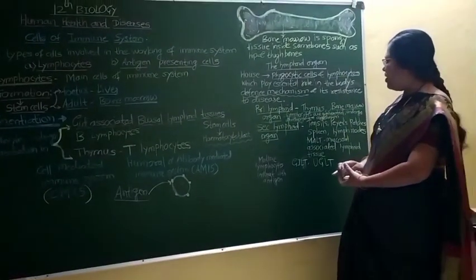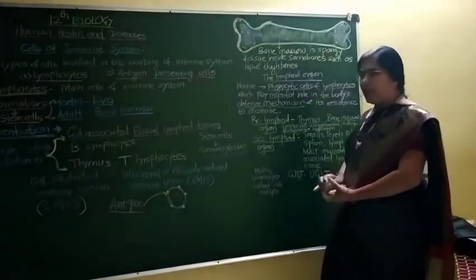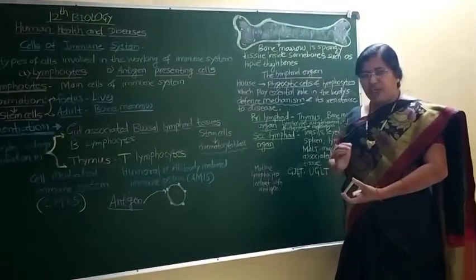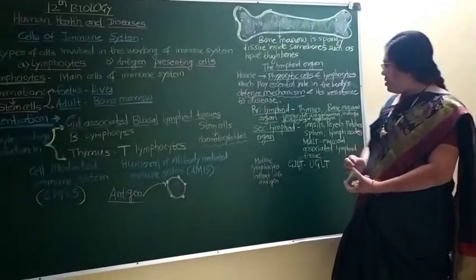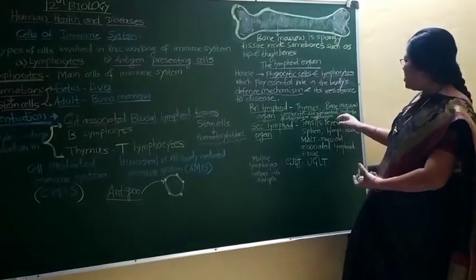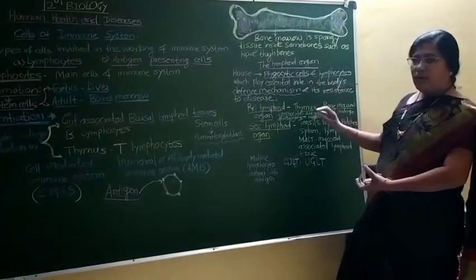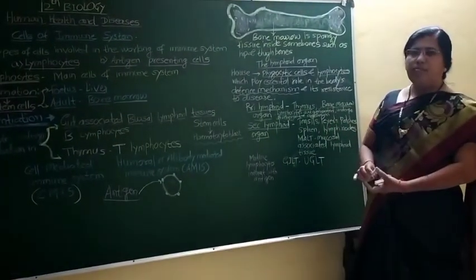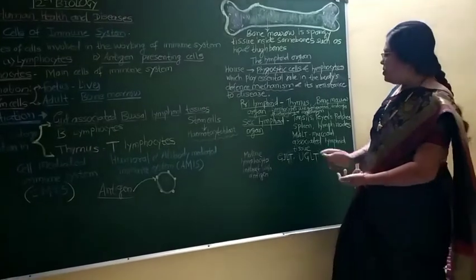In the primary lymphoid organ, lymphocytes are generated, and then they undergo development and maturation before moving on.